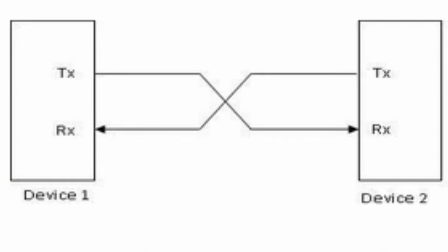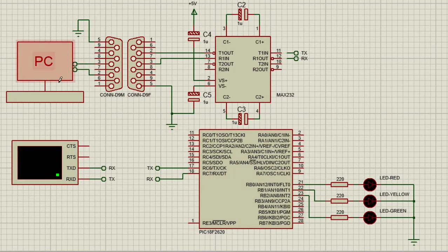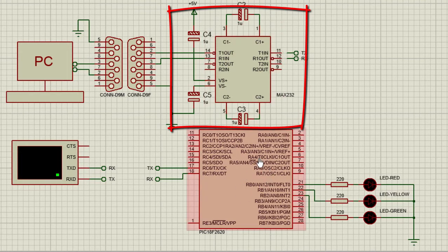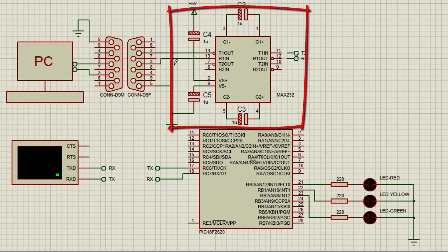If you are sending data between two microcontrollers, you don't need any special component — the transmitter of one microcontroller connects to the receiver of the other, and vice versa. But if you are communicating between a microcontroller and a PC, you need a voltage level converter, because the microcontroller uses TTL levels (0 and 5 volts), while the PC uses the RS-232 standard, which is +3 to +15 volts for logic low and −3 to −15 volts for logic high.